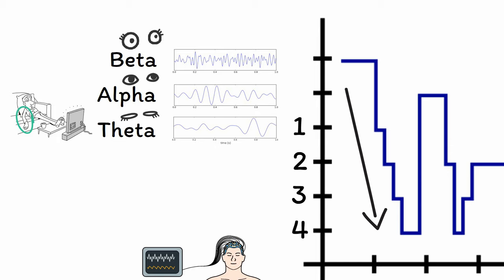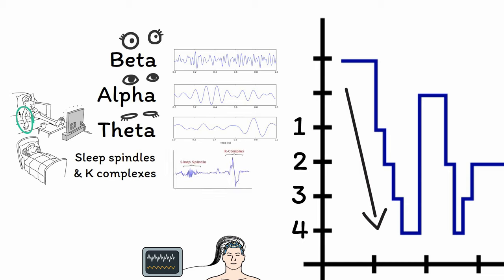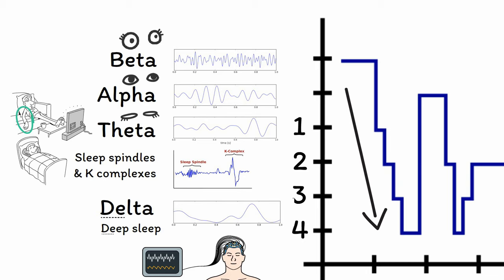Next, S is for sleep spindles and K complexes. Stage 2 sleep is characterized by a full absence of consciousness and a further decrease in muscle tone. On EEG, this appears in the form of specific patterns of electrical activity known as sleep spindles and K complexes. Next, D is for delta waves. The presence of low-frequency delta waves characterizes deep sleep, which you can remember by focusing on the first two letters of both delta and deep.